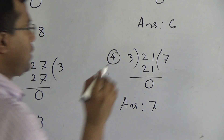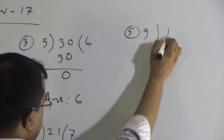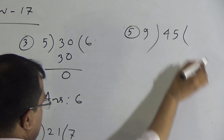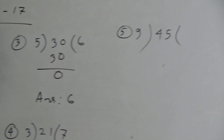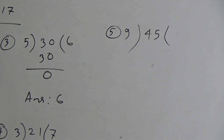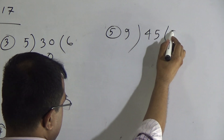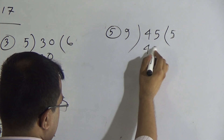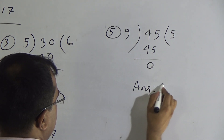Now we will do number 5: we will divide 45 by 9. Times tables of 9: 9 zeros are 0, 9 ones are 9, 9 twos are 18, 9 threes are 27, 9 fours are 36, and 9 fives are 45. If we give 5 times, then it will be 45. 45 minus 45 equals 0, so the answer is 5.